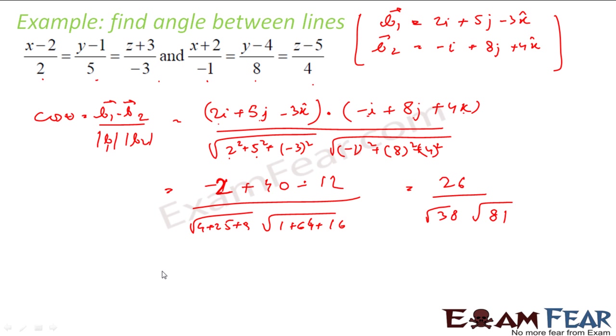And this is 64 plus 16 plus 1 is root 81. This is nothing but 26 by root 81 is 9 and root 38 leave it like this. So this is my cos theta. So my theta will be cos inverse of 26 by 9 root 38 and that is my answer.